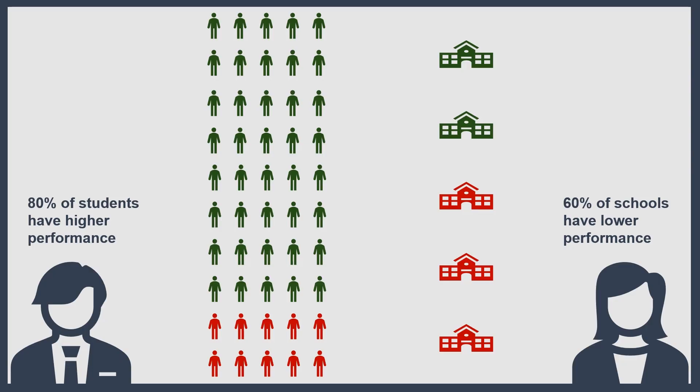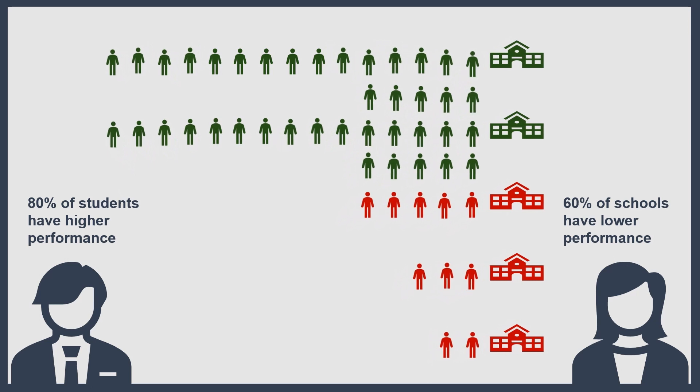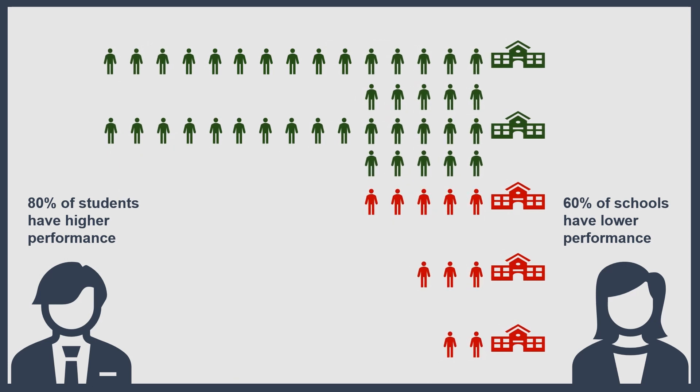Which one is right? It's possible that both of them are right. Different schools have different numbers of students, so yes, only two out of five schools are doing better, but they could be the two schools that most of the students attend. The numbers tell you something, but they don't tell you everything. You need to look at the numbers in the wider context.